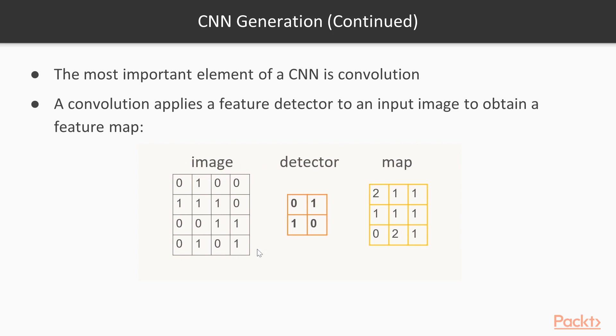If we have this image and this detector, we can obtain this map in the following way. We will multiply, pixel by pixel, each value in this subarray with the detector.